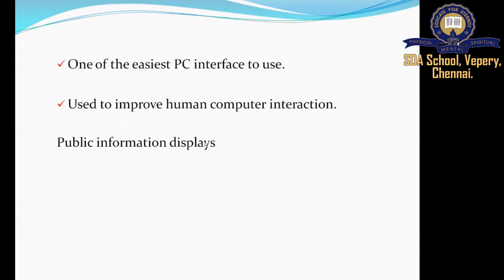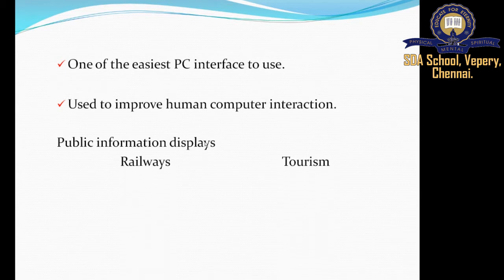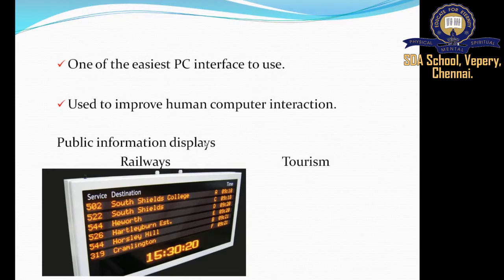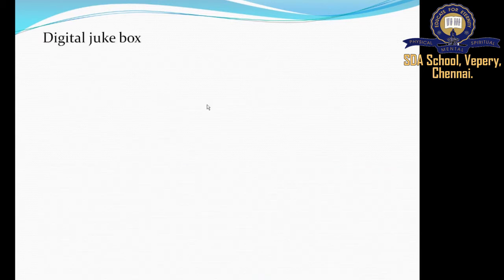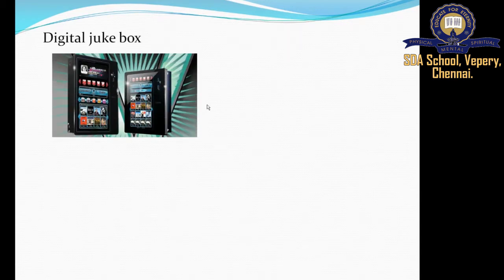Public information displays are available in railways and tourism. In railways, there are boards displaying train arrival and departure times. In tourism, there are route maps and location guides. Other applications include the digital jukebox — that is, music systems — where you can listen to music using a touch screen.